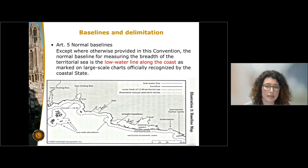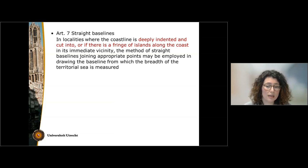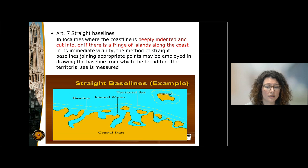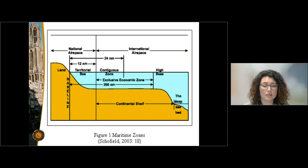But this is not always possible. States often have deeply indented coasts or they have a fringe of islands along the coasts — think for instance about Norway or Greece. So in those cases they can adopt a system of straight baselines, as you see in the map here. The coastal states will determine some external points to the coast and will draw straight baselines joining these external points. Once the state has determined the baselines, it can then project the different maritime zones.